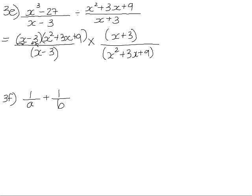Now we can divide like factors by each other. x minus 3 divided by x minus 3 is 1. x squared plus 3x plus 9 divided by x squared plus 3x plus 9 is 1. And 1 times x plus 3 is just x plus 3.